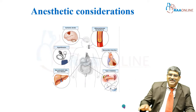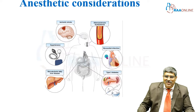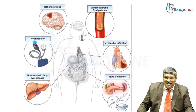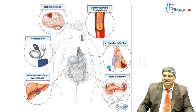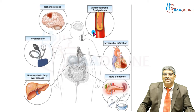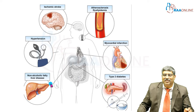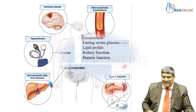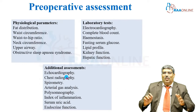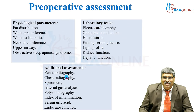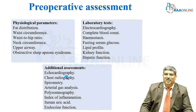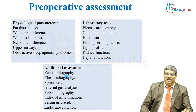On the disease side, there is a chance of hypertension, diabetes, MI, atherosclerosis, ischemic stroke, and non-alcoholic fatty liver disease. So, what are you going to do in the pre-op assessment?